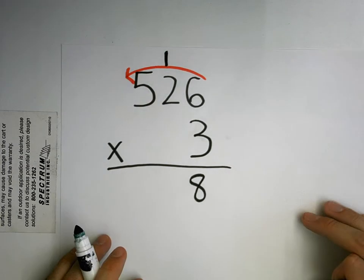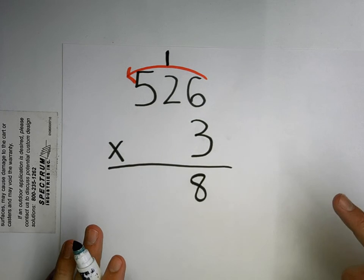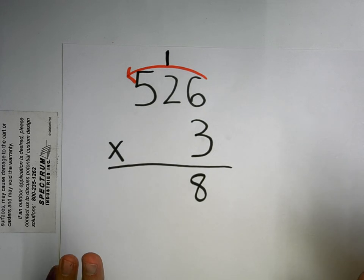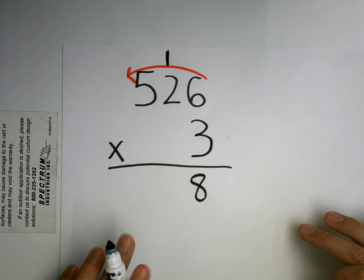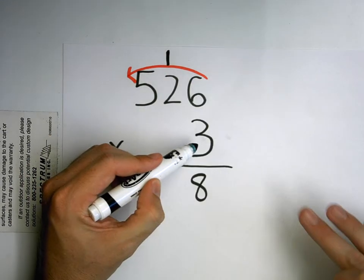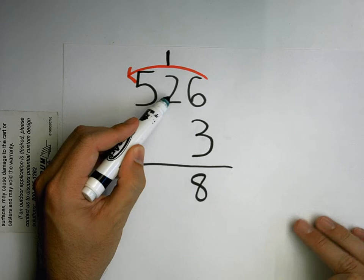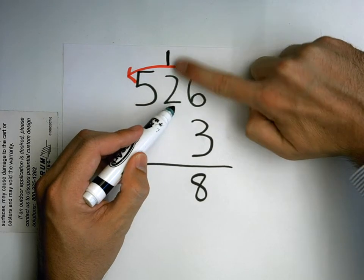Now who can tell me what I need to multiply and or add next? Don't just tell me the answer. Tell me what numbers I need to multiply and or add. Leanne. You multiply 2 times 3 and then add 1. Yep, so I take this and my windshield wiper goes over to the next one. 3 times 2. And then since I had this one left over from the last time I multiplied, I add 1.